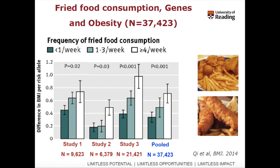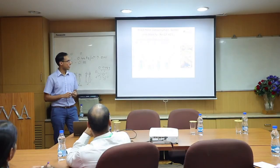Another example was done in the US population in 37,000 individuals, looking at the impact of fried foods on obesity and genetic risk. The population was stratified into three groups based on fried food consumption: less than once per week, one to three times per week, and more than four times per week. The first study in 9,000 individuals found that people who consume fried foods more than four times per week had increased genetic risk of gaining higher BMI. Other studies showed the same, and a meta-analysis confirmed that people who consumed unhealthy or fried fast food had increased genetic risk of obesity.